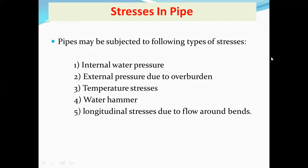Whenever water flows through a pipe, it will experience different types of stresses — just as there are different types of stresses in any structural component like columns and beams. The pipe may be subjected to the following types of stresses: internal water pressure, external pressure due to overburden, temperature stresses, water hammer, and longitudinal stresses due to flow around bends. We are going to see all these types of stresses in detail.